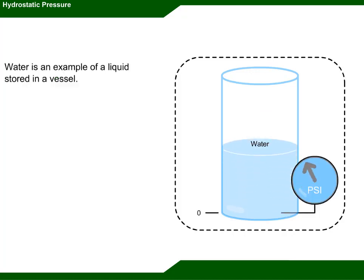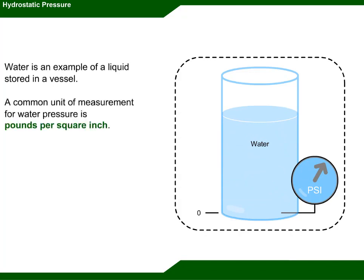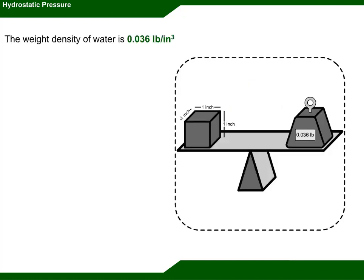Water is an example of a liquid stored in a vessel. A common unit of measurement for water pressure is pounds per square inch. The weight density of water is 0.036 pounds per cubic inch.